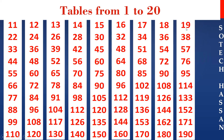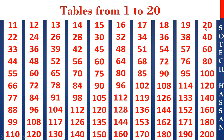19th table: 19 1s are 19, 19 2s are 38, 19 3s are 57, 19 4s are 76, 19 5s are 95, 19 6s are 114, 19 7s are 133, 19 8s are 152, 19 9s are 171, 19 10s are 190.